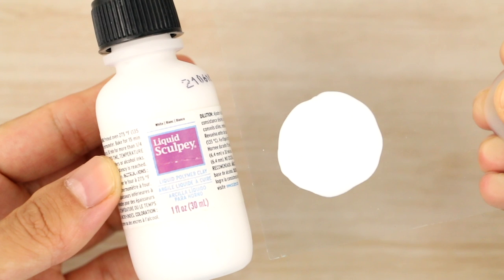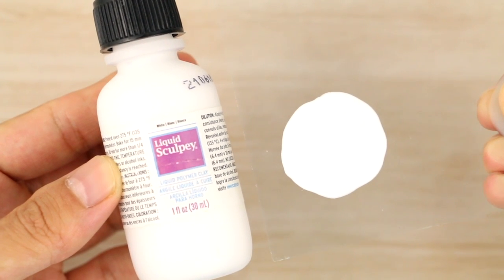The Sculpey White is a white liquid clay and this is great to use as a base to make white or pale sauces.